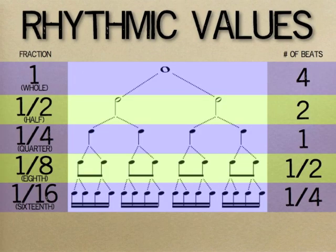Here is a chart of the basic rhythmic values so you can easily see how they compare to each other. On the left column, you see the fractional amount of the circle. And on the right column, you see the number of beats for each rhythmic value. With each level down, the note value is divided into two equal parts.